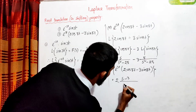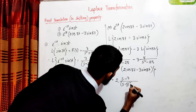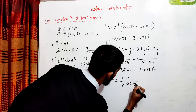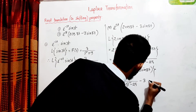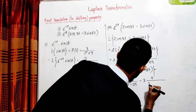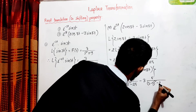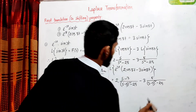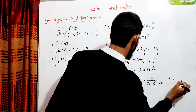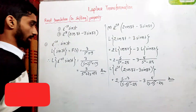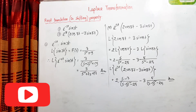Applying the first shifting property with A equals 3, we replace s with (s minus 3). The result is 2(s minus 3) over ((s minus 3) squared plus 25) minus 3 times 5 over ((s minus 3) squared plus 25), which simplifies to (2s minus 6 minus 15) over ((s minus 3) squared plus 25).